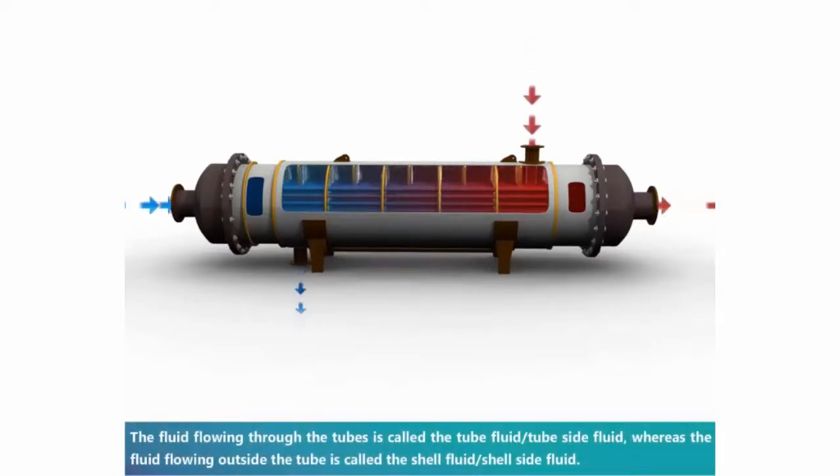The fluid flowing through the tubes is called the tube fluid or tube side fluid, whereas the fluid flowing outside the tube is called the shell fluid or shell side fluid.